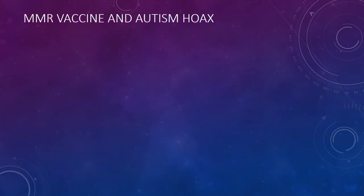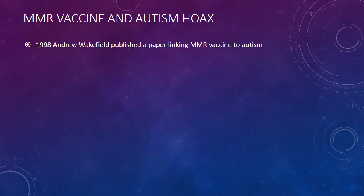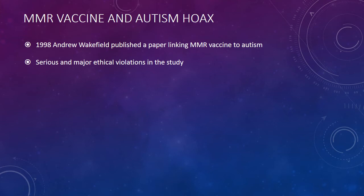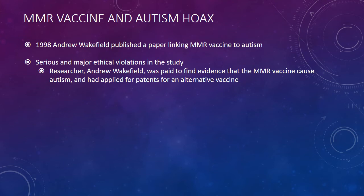We're going to talk about the MMR vaccine and the autism hoax. In 1998, Andrew Wakefield published a paper linking the MMR vaccine to autism. There are serious and major ethical violations in this study — appalling kinds of violations. The researcher was paid to find evidence that this vaccine causes autism and had applied for patents for an alternative vaccine. So he had huge financial incentive to find that there was a link between this particular vaccine and autism.